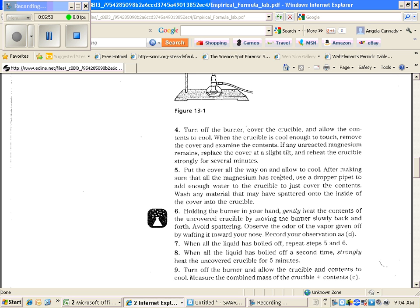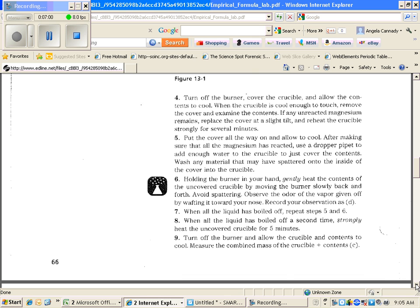This should not take a long period of time. So if we go ahead and get started at the beginning of the class period, you should be good. So let's say all our liquid is boiled off for the second time. That's step number eight. The liquid is boiled off for a second time. We're going to strongly heat the uncovered crucible for five more minutes.